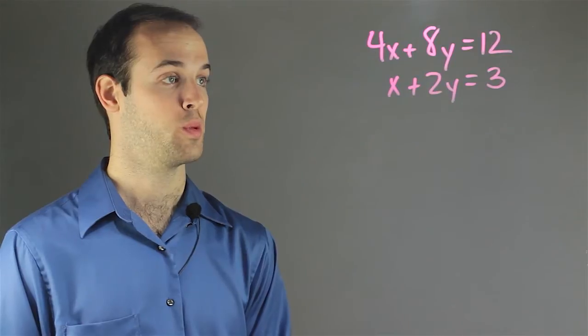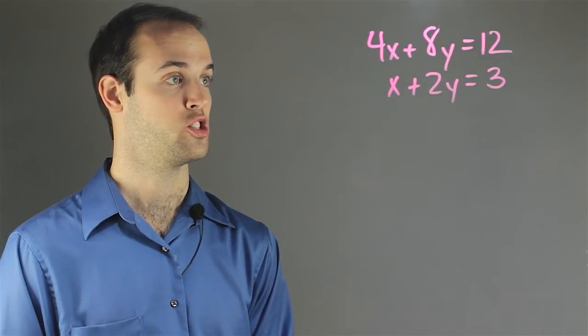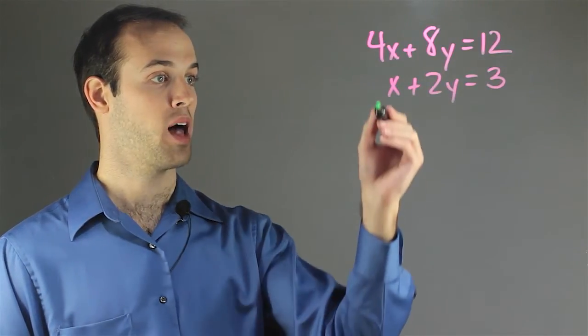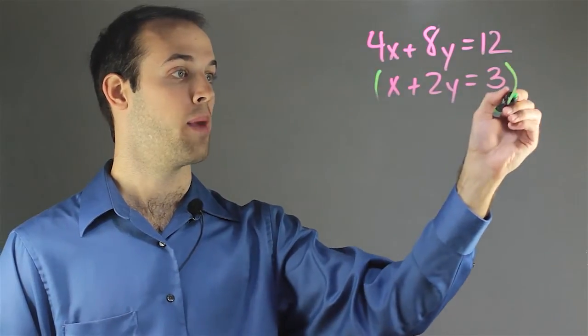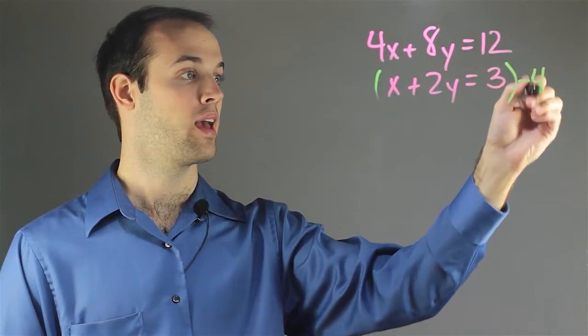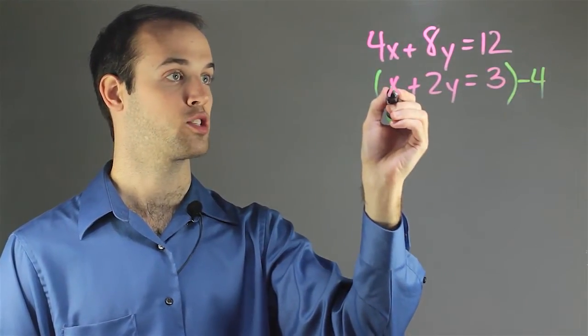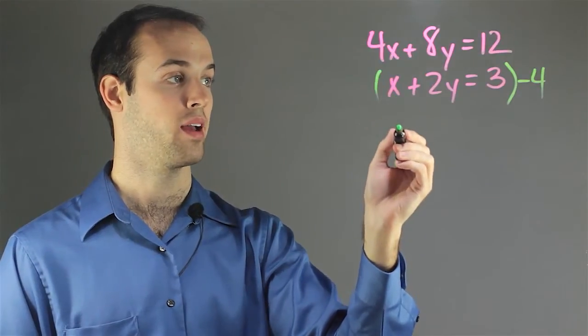Well the first thing we would do in an elimination situation is we want to multiply the bottom by negative 4, and again I'm targeting this x right here to get it to drop out when I add them together.